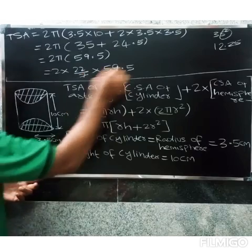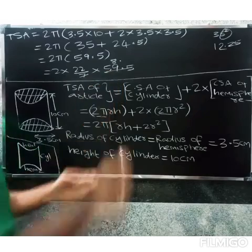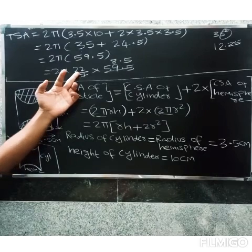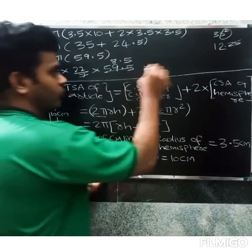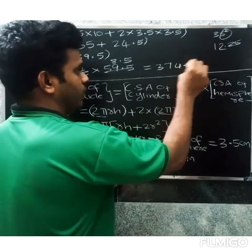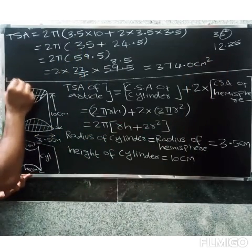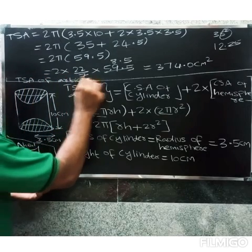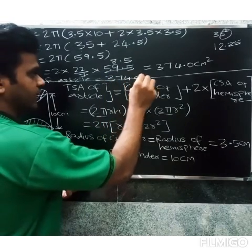So 2 into 22/7 into 59.5 simplifies to 44 into 8.5, which equals 374. So the total surface area of the article equals 374 centimeter square. That is the answer.